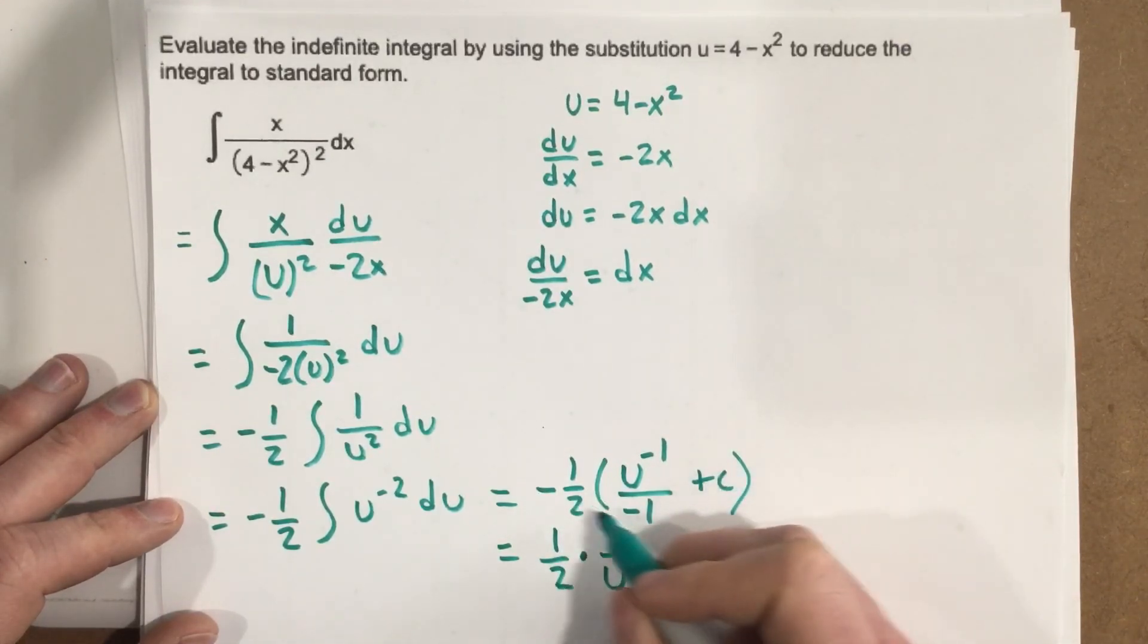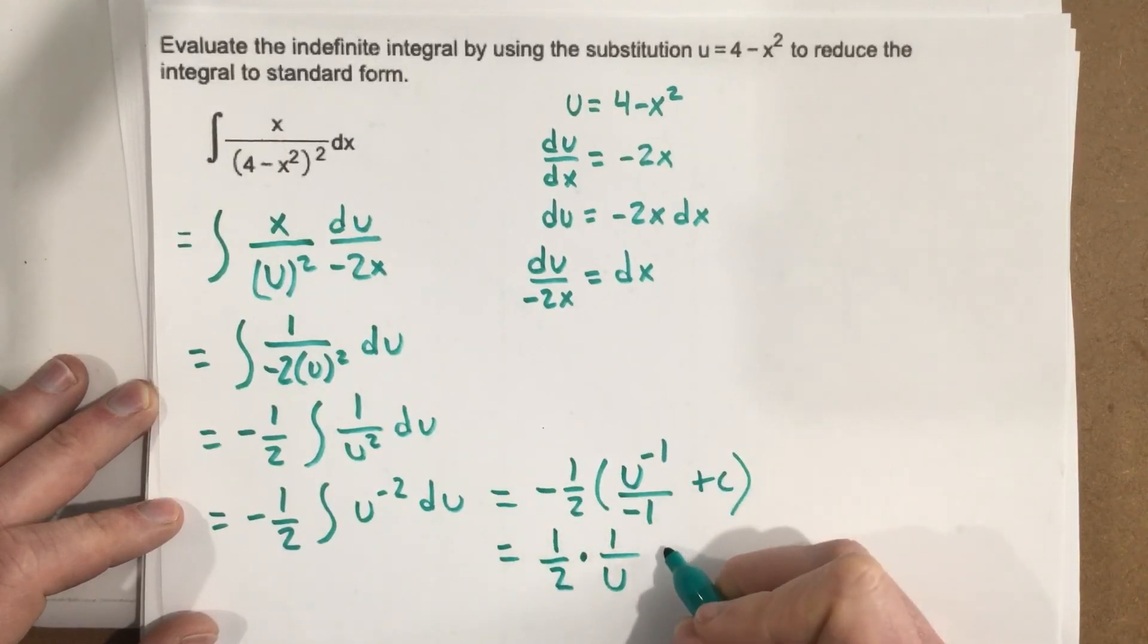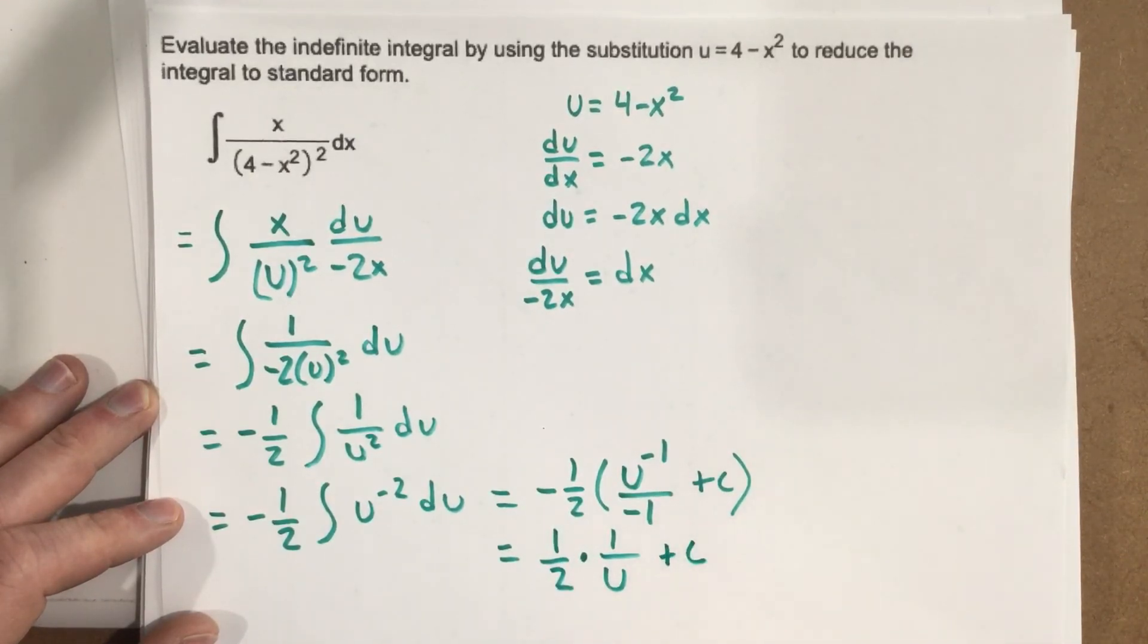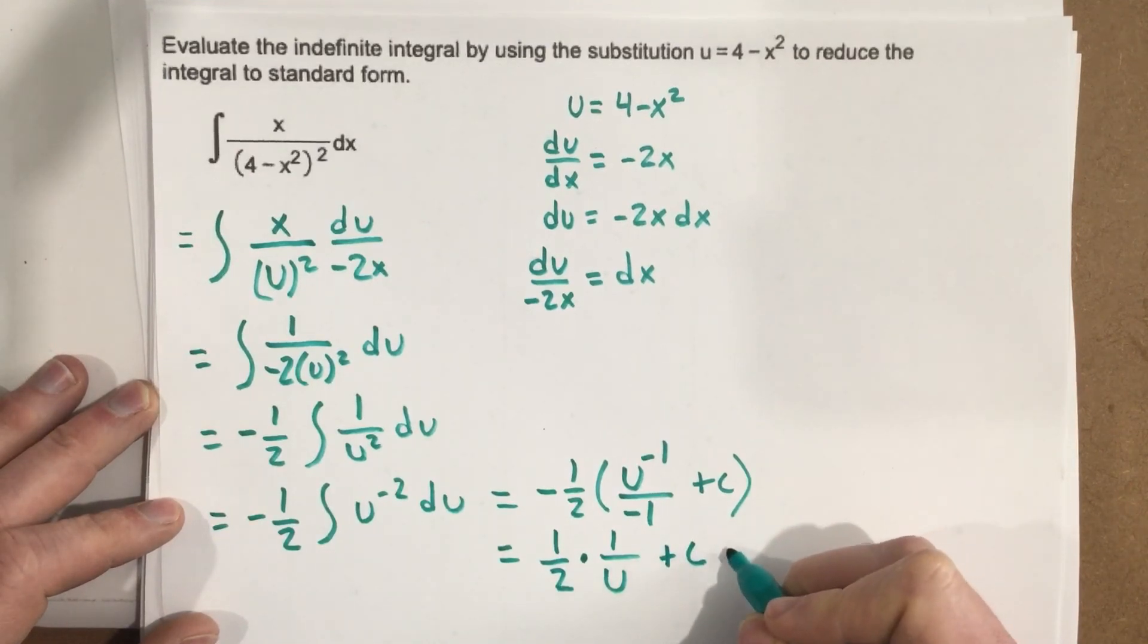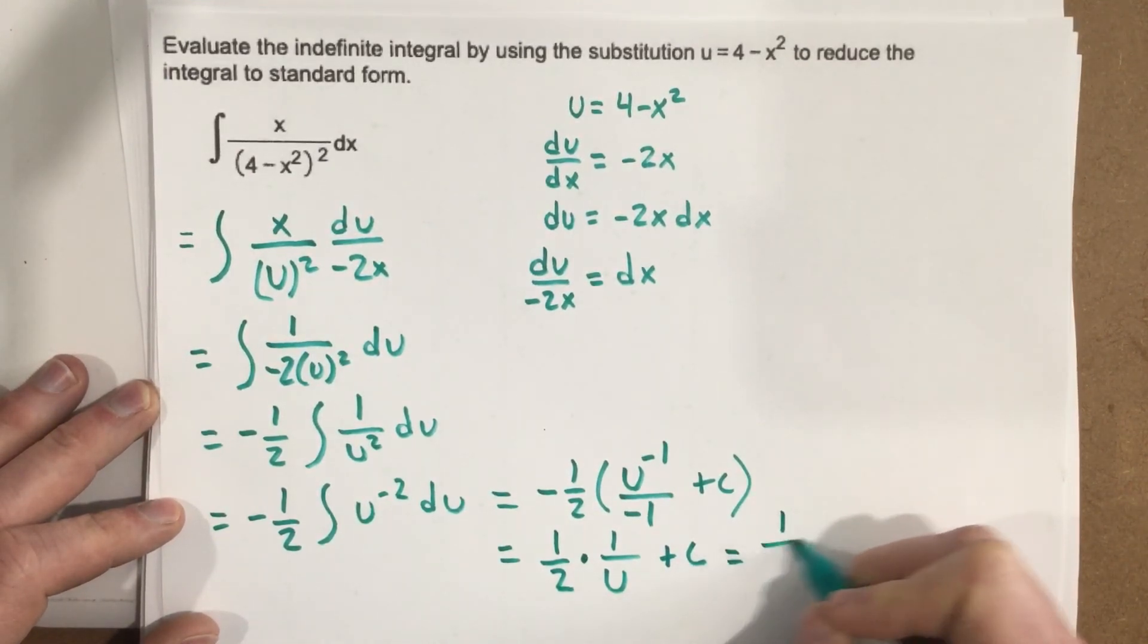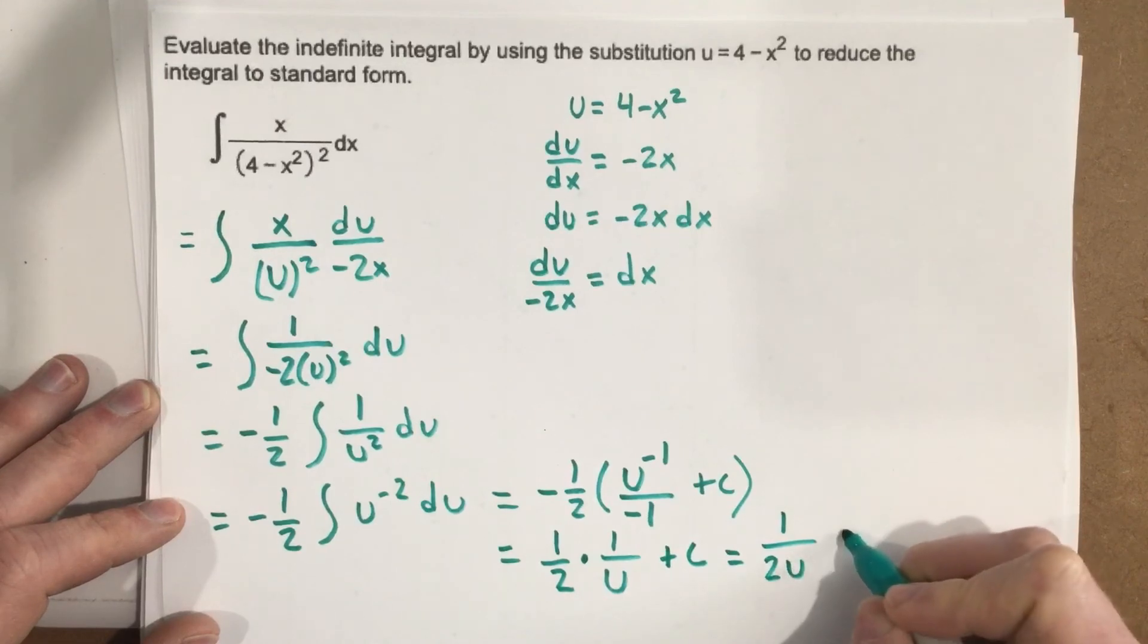now when you take the negative 1 half and you multiply it times a c, that's just going to be a constant. C stands for a constant, so this times this is still just some constant. So plus c, which gives you 1 over 2u plus c.